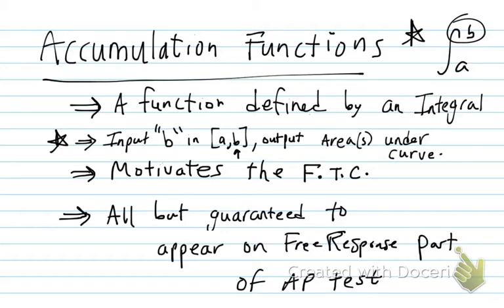But if you input the second number, the higher number typically, what's the output of that function going to be? Well, it'll be the area under the curve from a to wherever your b is. Why is this function so important? It'll help us motivate the fundamental theorem of calculus. You will see this abbreviation a lot. It does not mean the Federal Trade Commission. It means the fundamental theorem of calculus, which bridges together a lot of the concepts we've studied all throughout the year, as its name suggests.